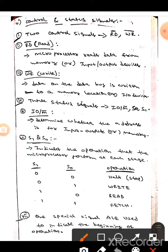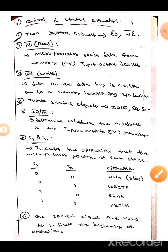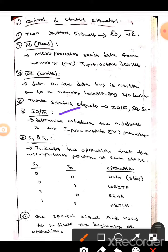There are three status signals. They are IO by M bar, S0 and S1. IO by M bar determines whether the address is for input output or memory.